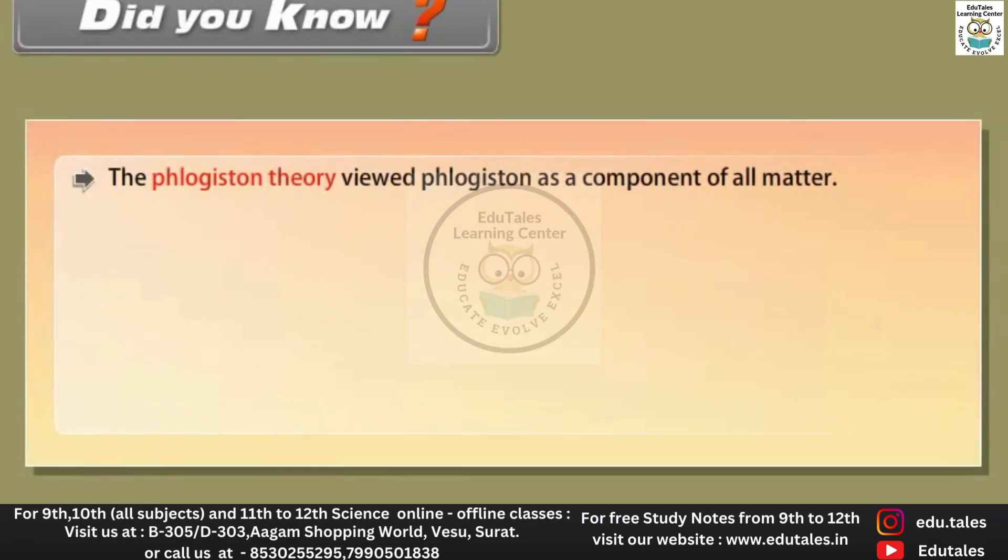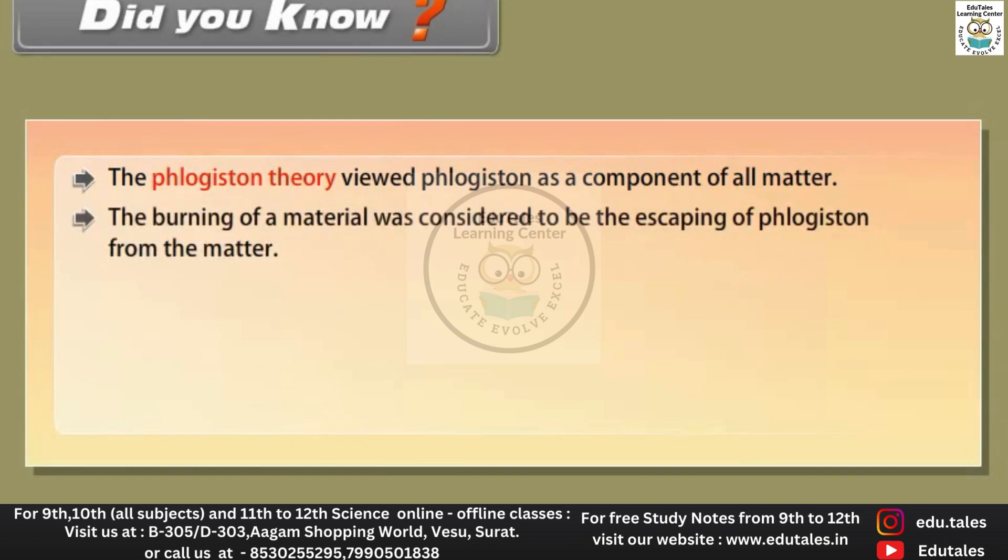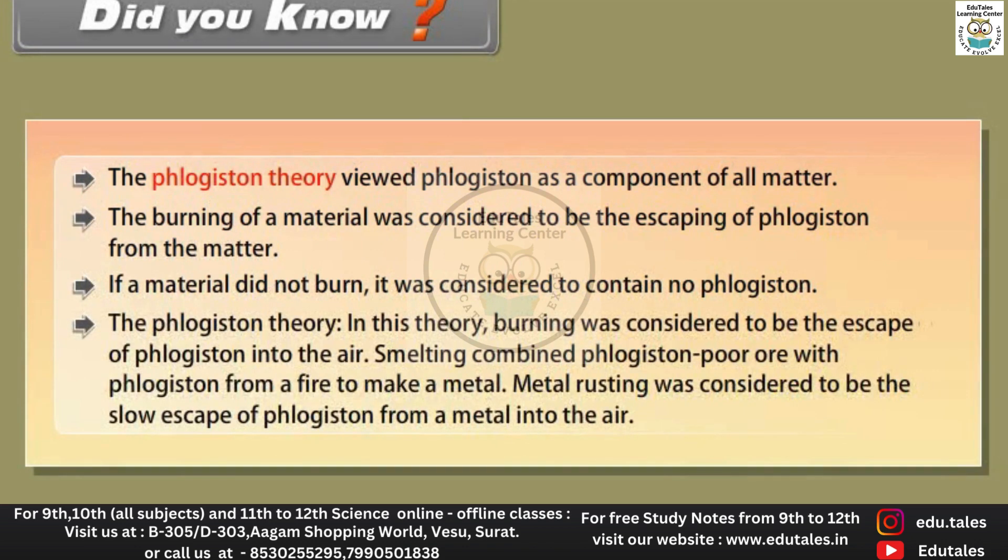The phlogiston theory viewed phlogiston as a component of all matter. The burning of a material was considered to be the escaping of phlogiston from the matter. If a material did not burn, it was considered to contain no phlogiston. In this theory, burning was considered to be the escape of phlogiston into the air. Smelting combined phlogiston poor ore with phlogiston from a fire to make a metal. Metal rusting was considered to be the slow escape of phlogiston from a metal into the air.